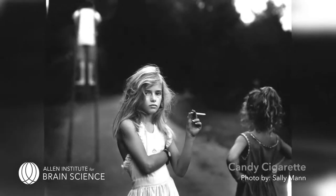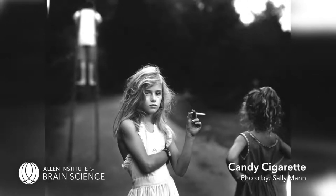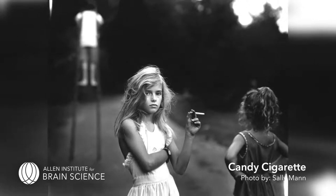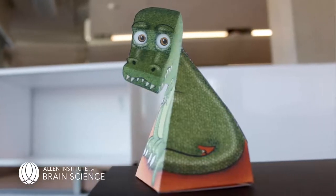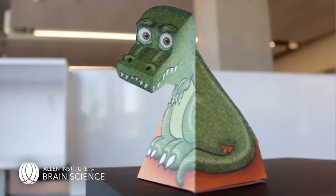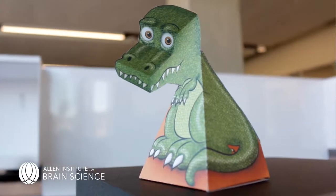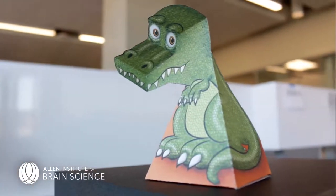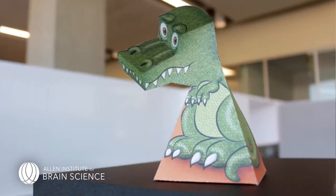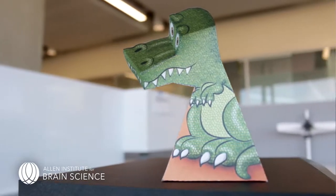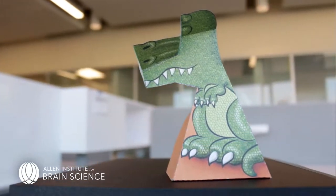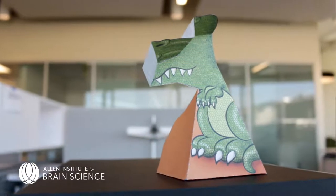If I then inform you that the photograph is called 'Candy Cigarette,' those conclusions might become entirely different. In fact, the visual system must rely on context at all levels because vision is a problem that mathematicians call ill-posed. This means that a variety of possible causes may be responsible for the same visual scene, just because of geometry and light.